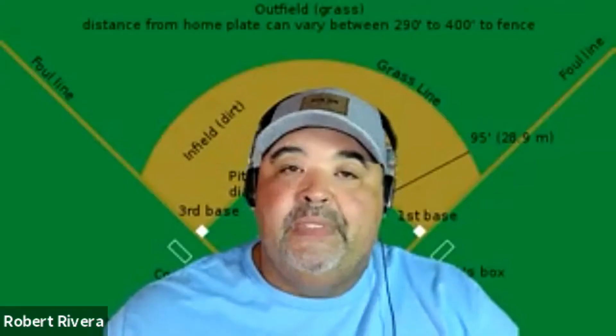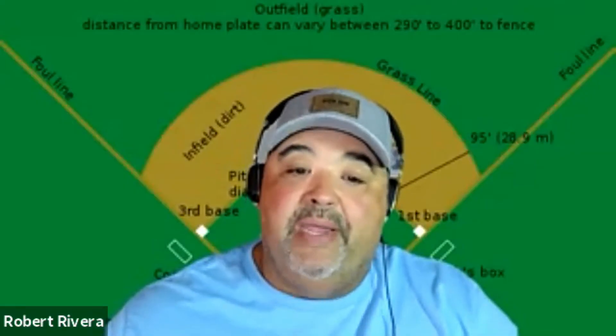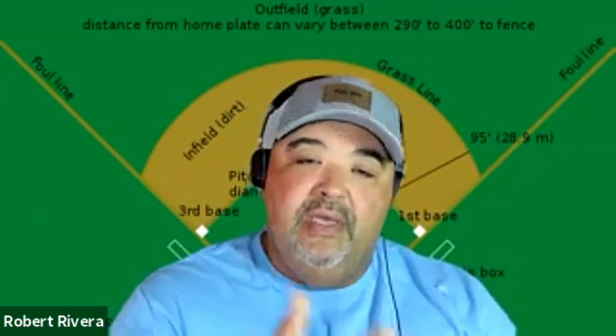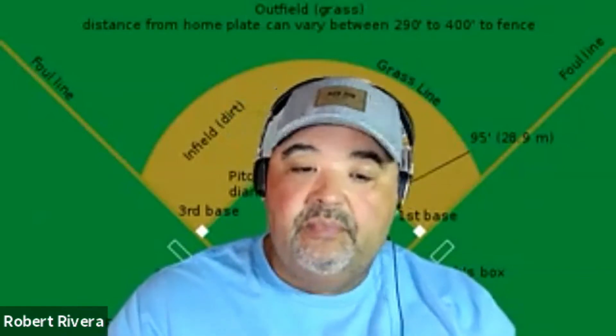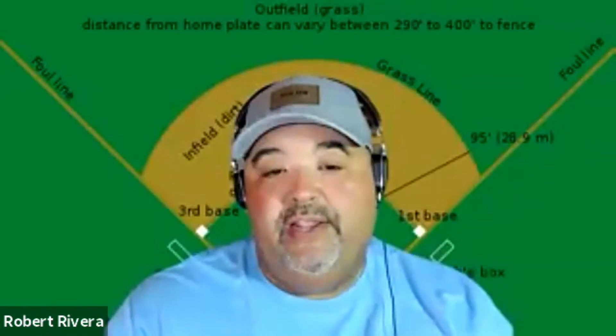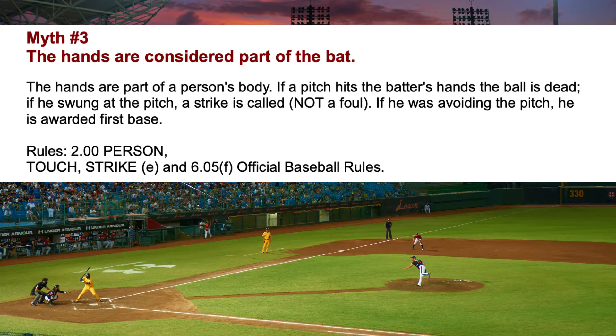Myth Number Three: the hands are considered part of the bat. I have to tell you folks — big no. Hands are not considered part of the bat. If he swings and it hits his hands, it's a strike. As umpires, we have to determine: he did swing, he made the attempt, it hit him in the hand — it is a strike. Runners cannot advance.